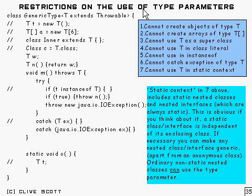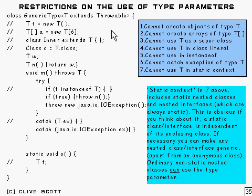There are a number of things that you can't do with type parameters, and this is basically a list of them. To understand why, it helps to remember that in the actual class for the generic file, the type that you've passed in as T gets erased. So you don't have any type information there about any parameterized types.